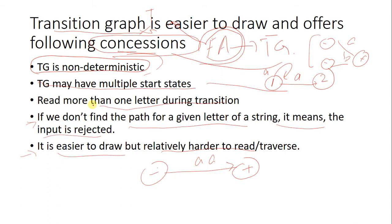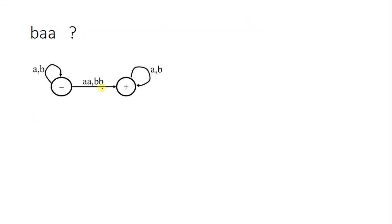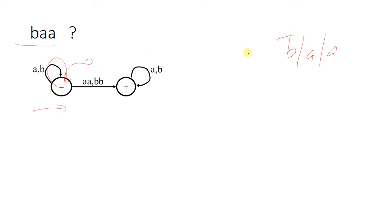Let's see some examples. Here we have a transition graph and a string to pass through it. If we read it as: first B, then A, then A — one letter at a time — for this B we move here, for this A we move here, and for the third A we stay here. This string will be rejected if we read single letters at a time.